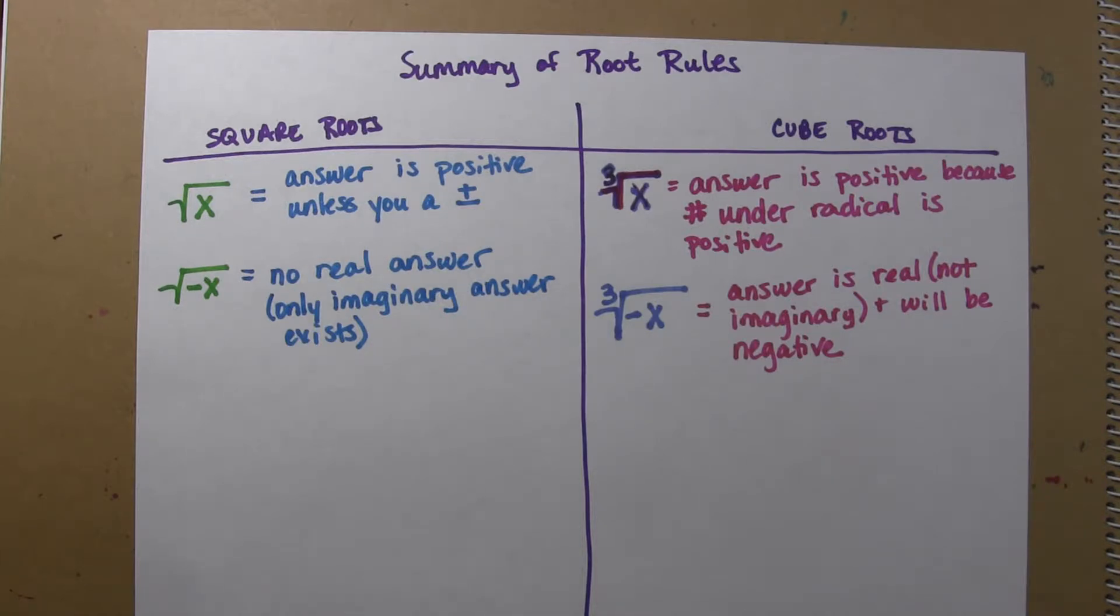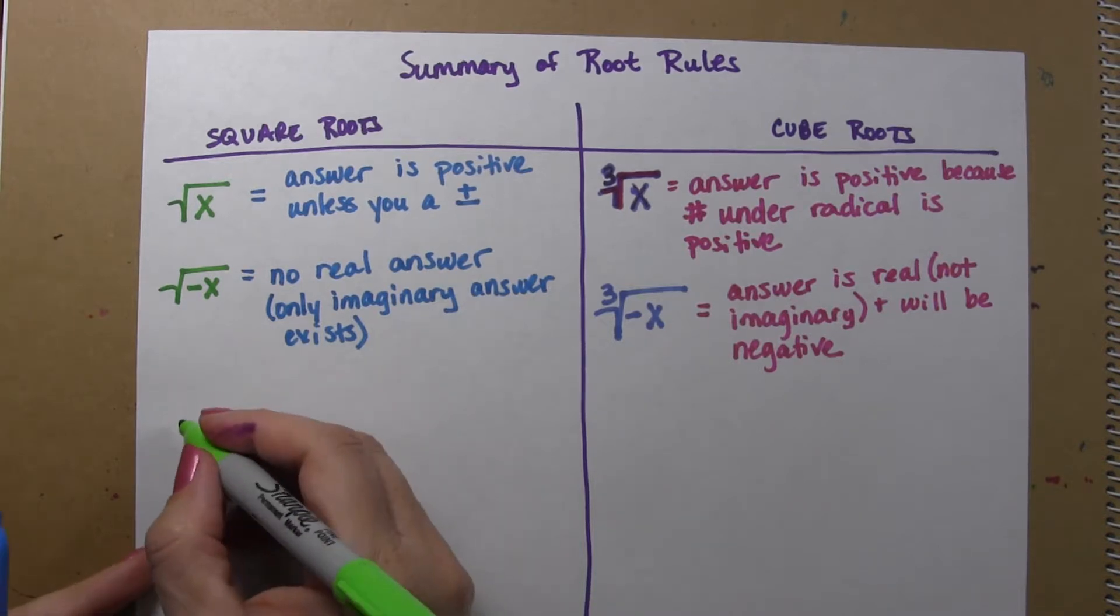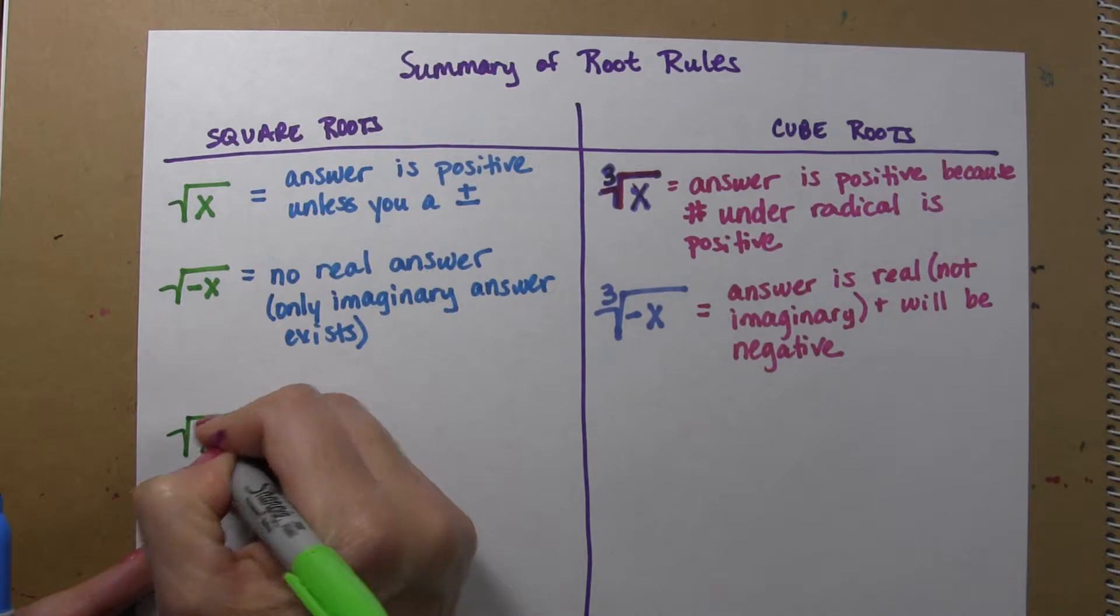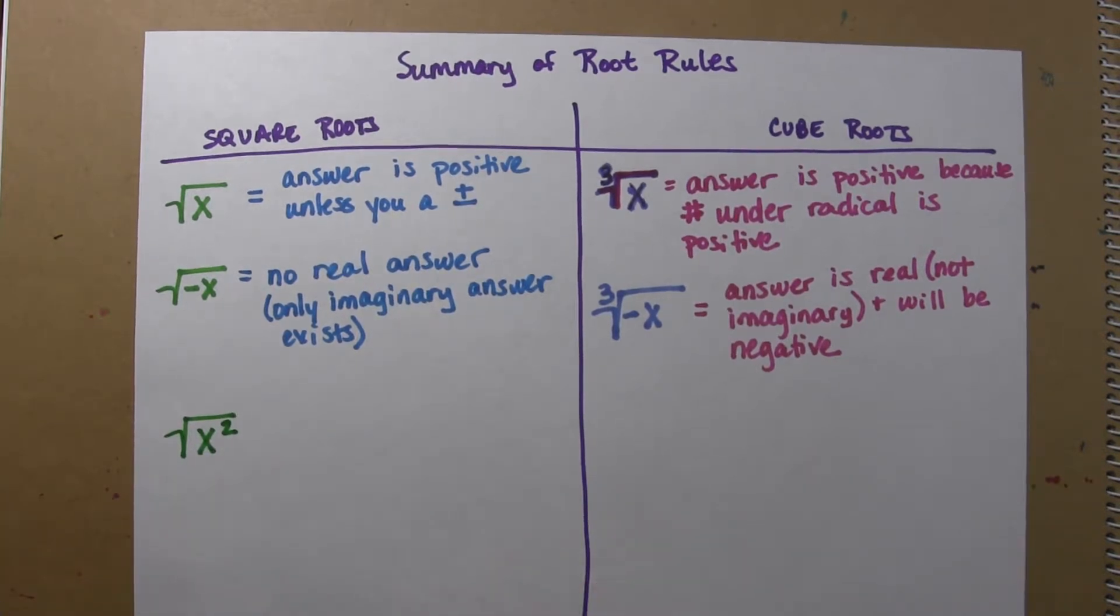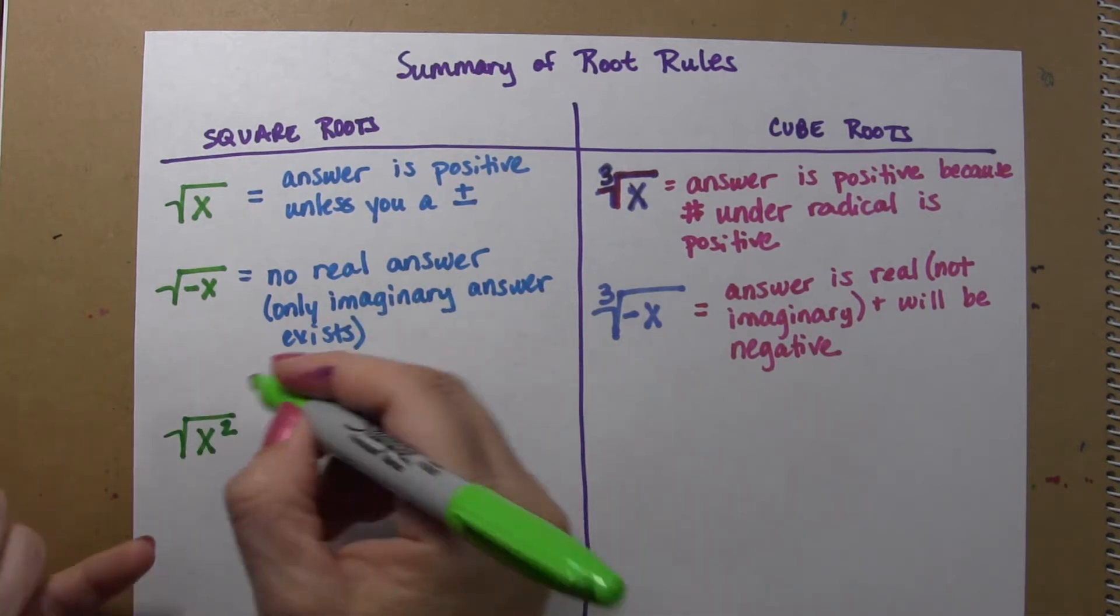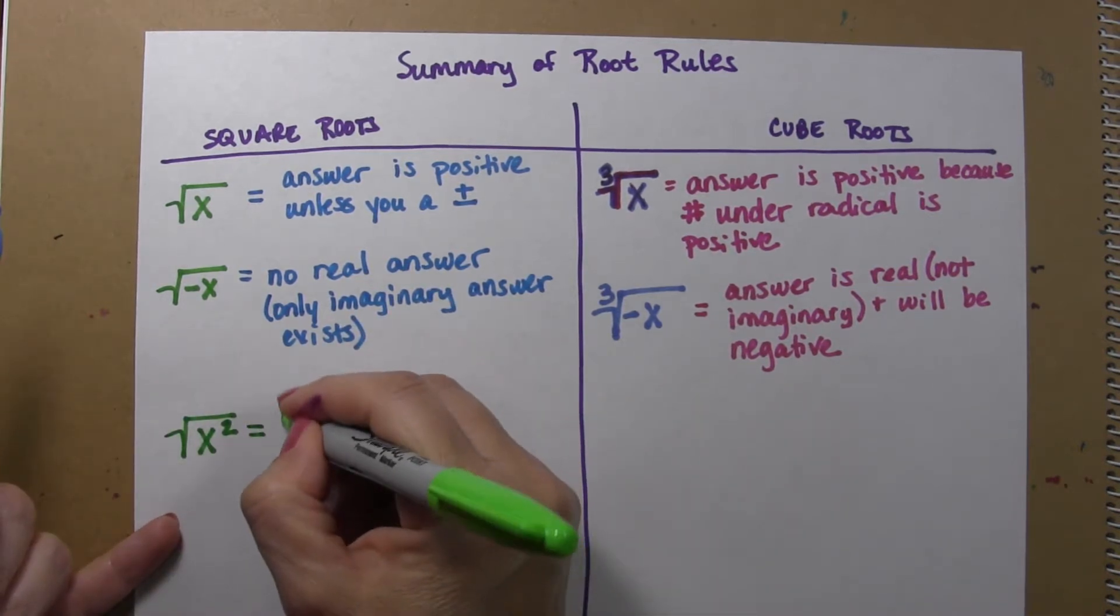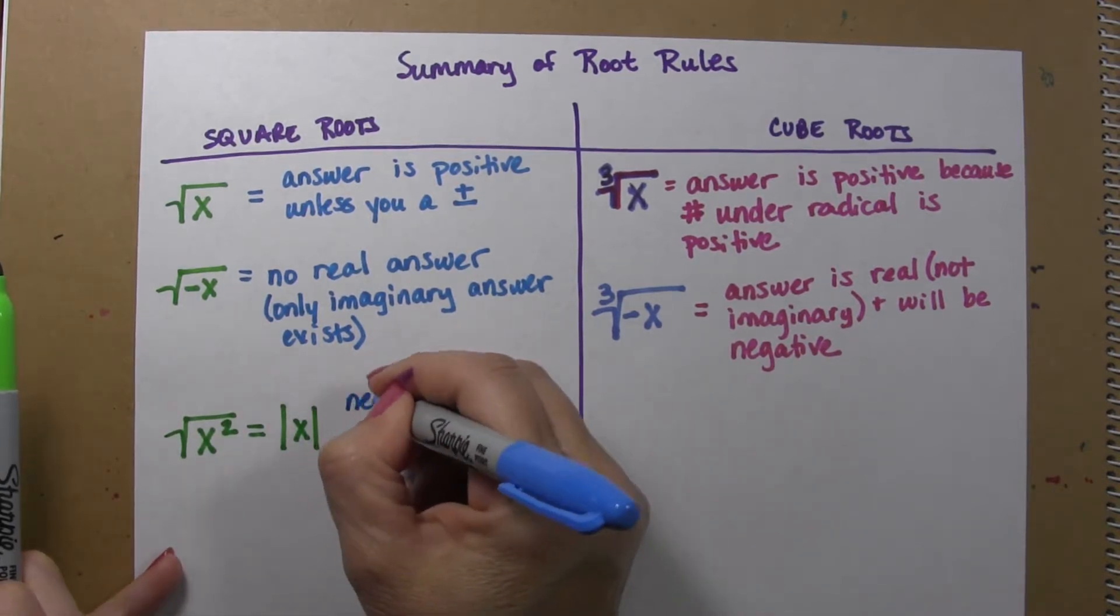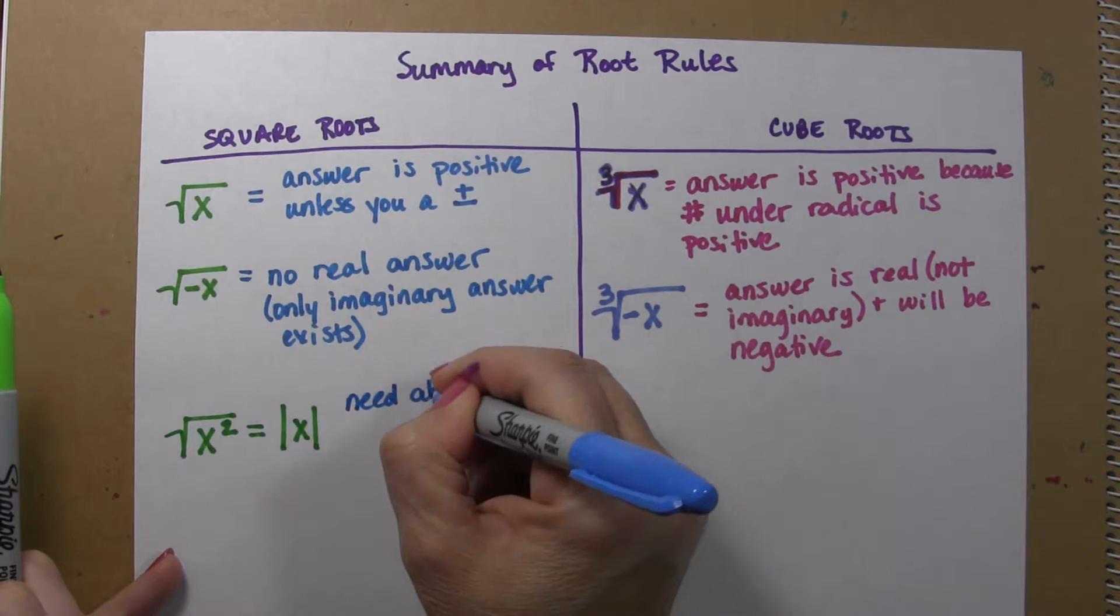Now, let's say that I was told that we are going to take the square root of x squared. What is that going to do for us? Well, the answer to this is going to be the absolute value of x.